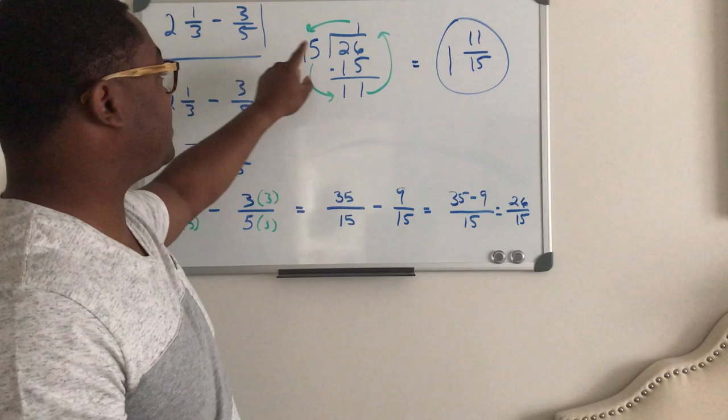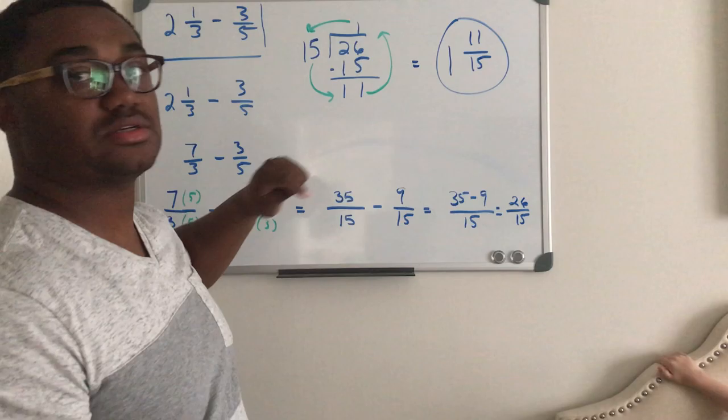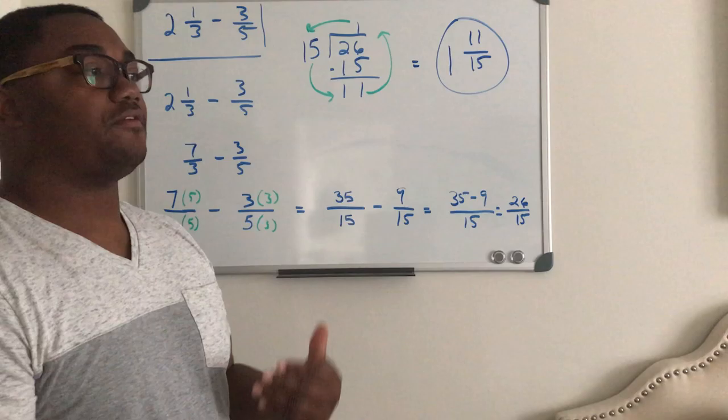So 15 is the denominator, so it goes on the outside of the radicand. So this is the divisor, this is the dividend, and this is the quotient. So 15 goes into 26 how many times?